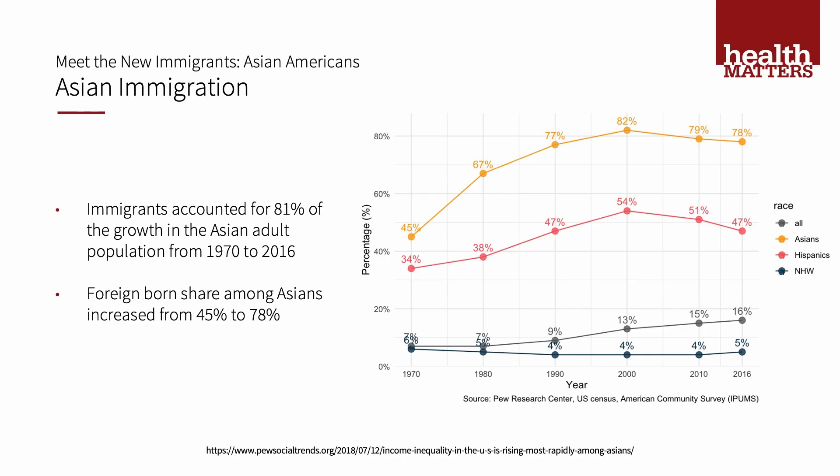Now let's look at social determinants of health among Asian immigrants. Immigrants accounted for 81% of the growth of the Asian adult population from 1970 to 2016, while the foreign-born share increased among Asians from 45% to 78%. This is mainly due to H-1B visas during this time.